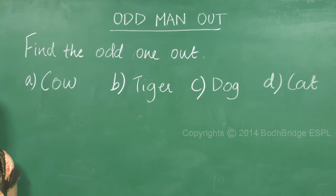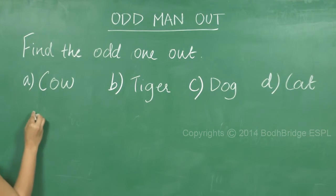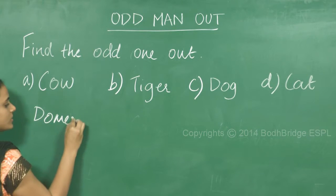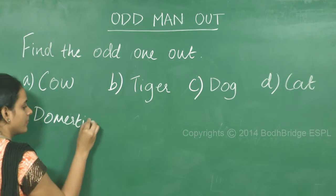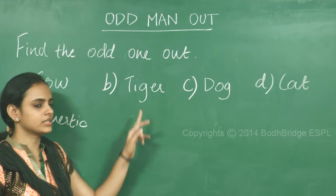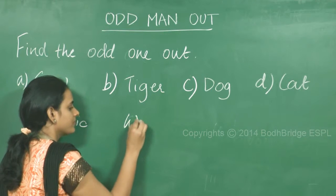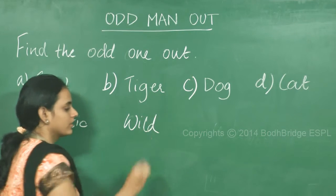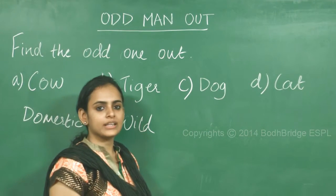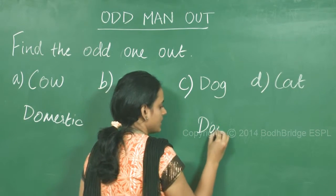But how do we further classify these animals? We know that Cow is a domestic animal, so Cow is domestic. Tiger is not a domestic animal — it's a wild animal, so Option B, Tiger, is a wild animal. Dog is again a domestic animal, so this is domestic.